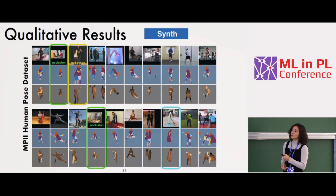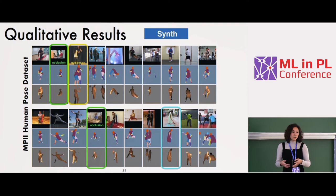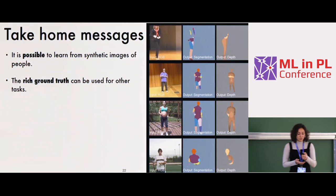What we cannot handle is multi-person cases — the network is used to seeing one left leg and one right leg, so it assigns one leg to one person and another leg to another. This can be addressed by adding more people in synthetic data. Another failure case is dress deformation: our clothes are pseudo-clothes with no 3D deformation, just texture maps on the body surface, so the whole dress gets assigned as the torso — the best it could do, but a reasonable segmentation.